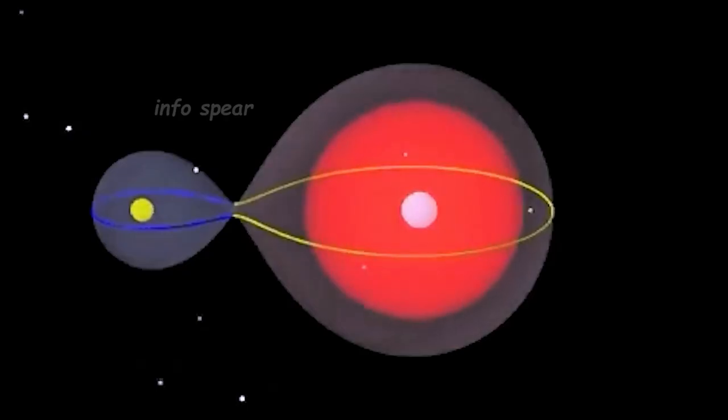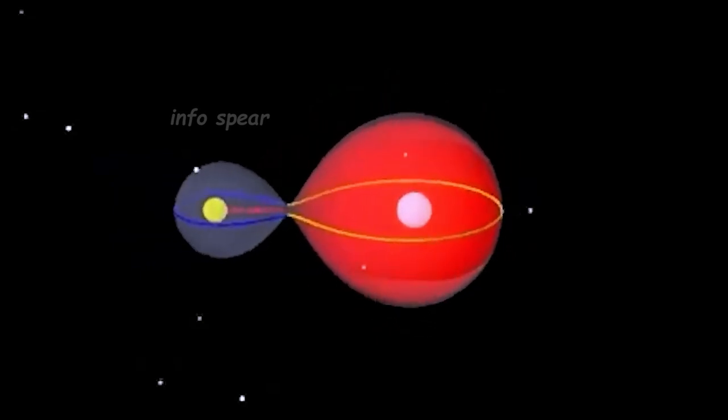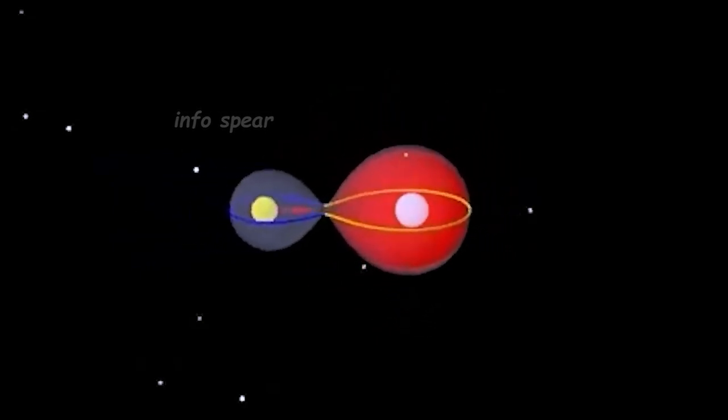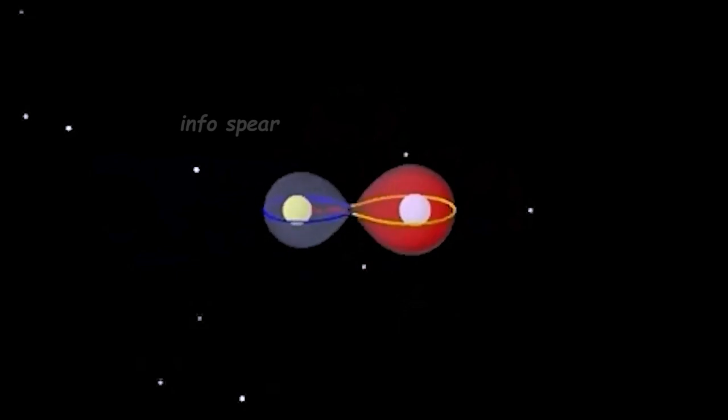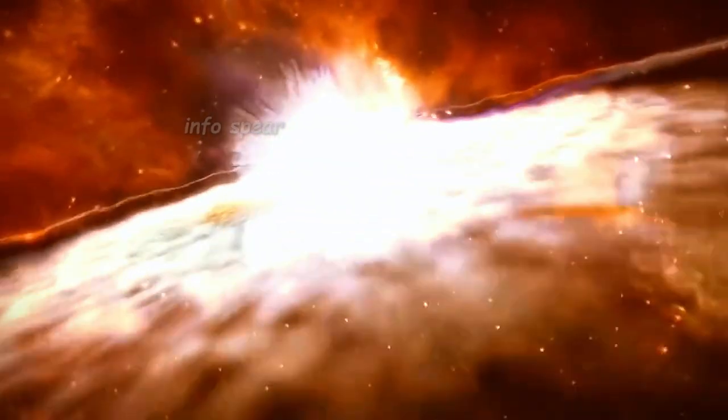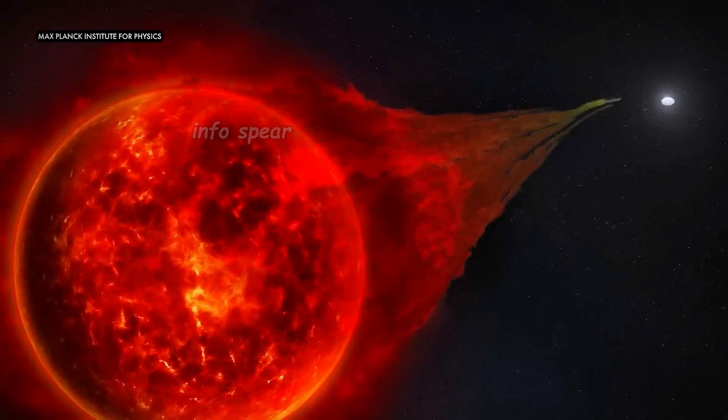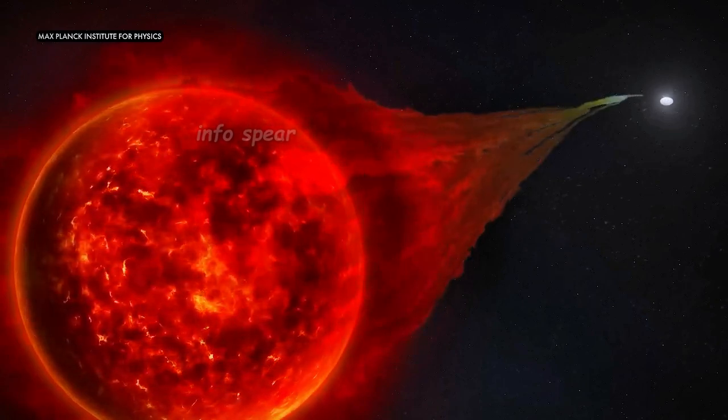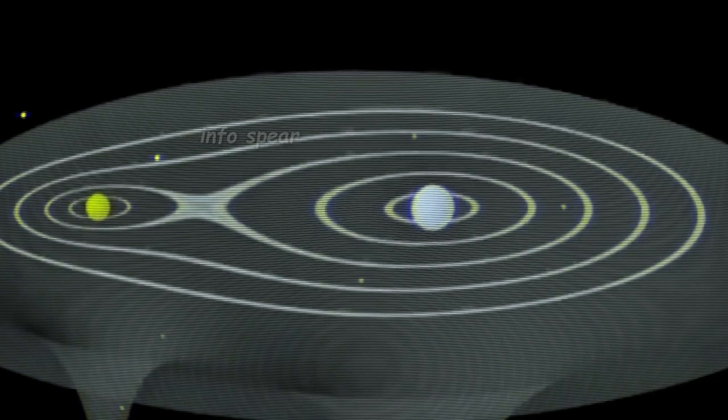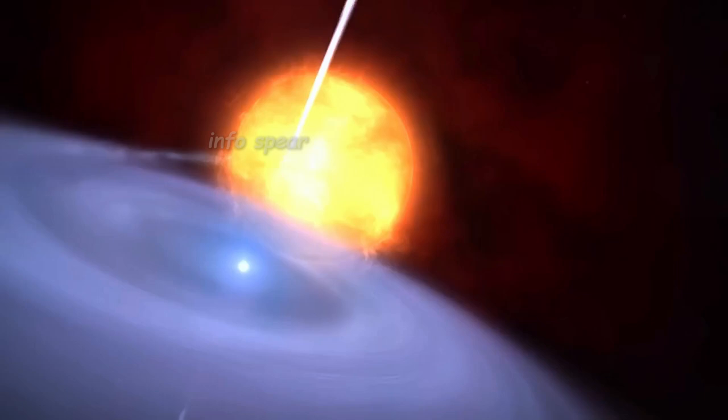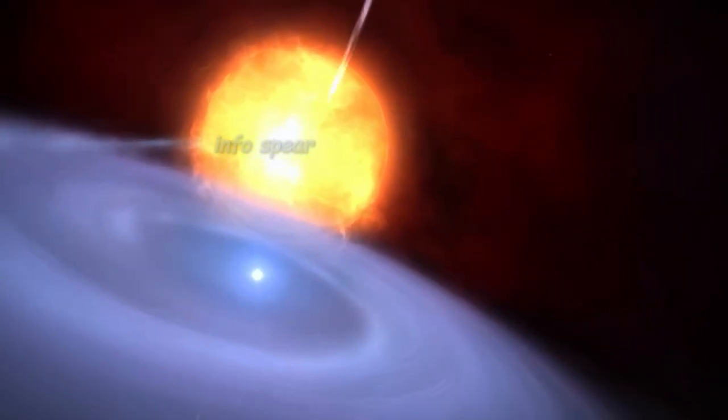Now, how does this cosmic duo set the stage for a nova? Here's where things get really interesting. The white dwarf, with its immense gravity, slowly pulls hydrogen from the red giant, like a magnet drawing metal. Over time, this hydrogen gathers on the surface of the white dwarf until, boom, a thermonuclear explosion erupts, creating what we call a nova. Unlike a supernova, which signals the end of a star's life, a nova is a dramatic but temporary explosion, a stellar flare-up that illuminates the night sky but leaves its star intact, ready for the next cycle.